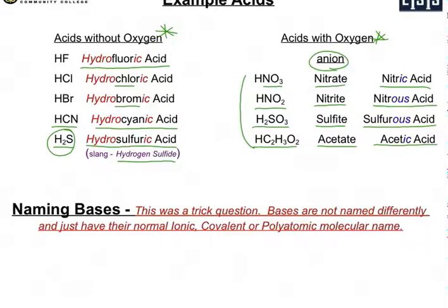So those are some examples of acids. Now for bases, I have down here, this sort of was a trick question I say in red. Bases do not have any unique naming convention. So essentially ignore that it's a base. You just look at the molecule and you name it like you would, whether it's an ionic, covalent, or polyatomic molecule.